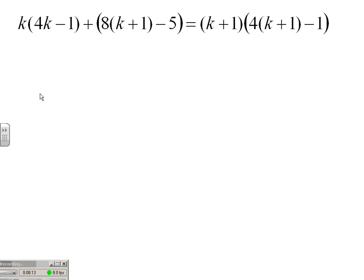So we're back. This is where we left off at the last step after our substitution. Now simplifying this, we should be able to pass this off to a good freshman algebra 1 student. A little distribution: 4k squared minus k plus, here I would get 8k plus 8 minus 5 plus 3.